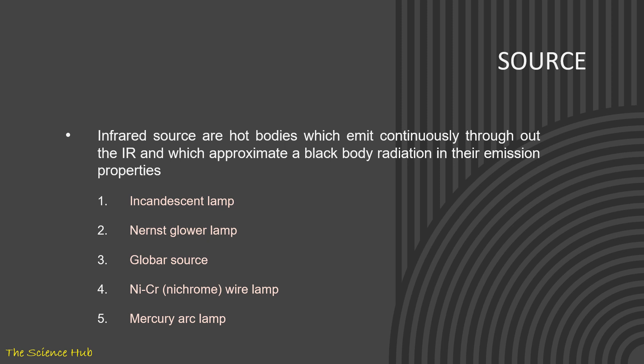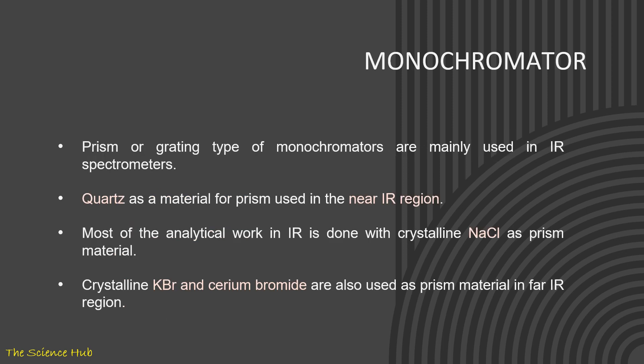First we're talking about source. Infrared sources are hot bodies which emit continuously throughout the IR and which approximate a blackbody radiation in their emission properties. What are the sources used in IR spectroscopy? That is incandescent lamp, Nernst glower lamp, globar source, nichrome wire lamp, mercury arc lamp. Next is monochromator. Prism or grating type of monochromators are mainly used in IR spectrometers. Quartz as a material for prism is used in near IR region. Most of the analytical work in IR is done with crystalline NaCl as a prism material. Crystalline KBr and cesium bromide are also used as prism material for far IR region.